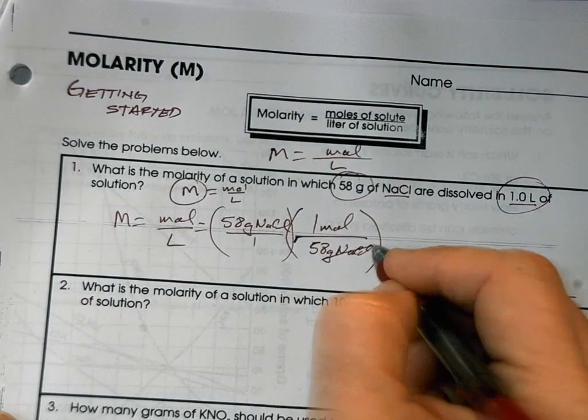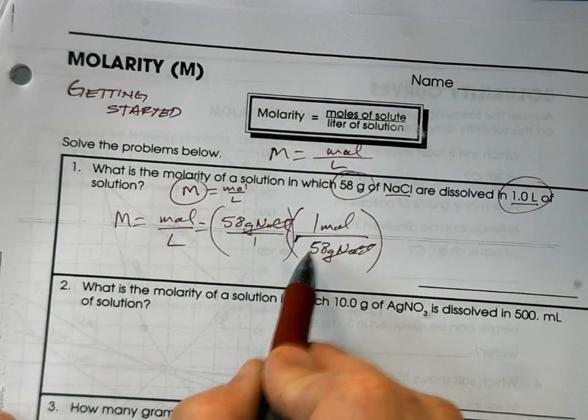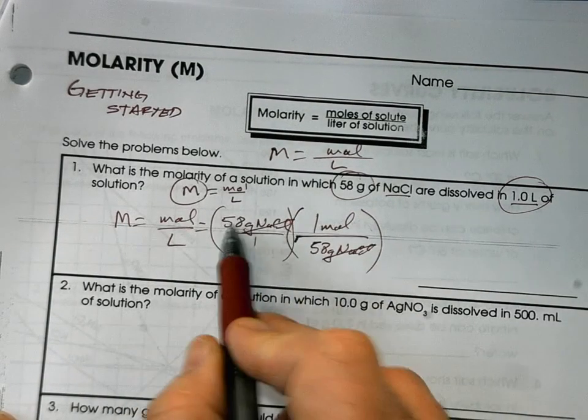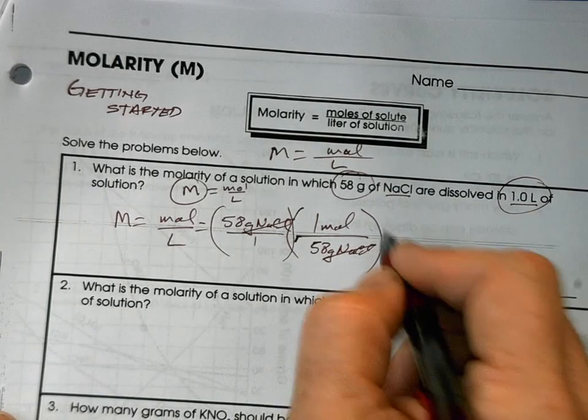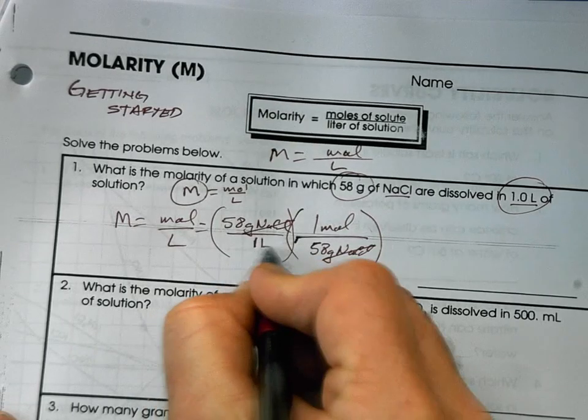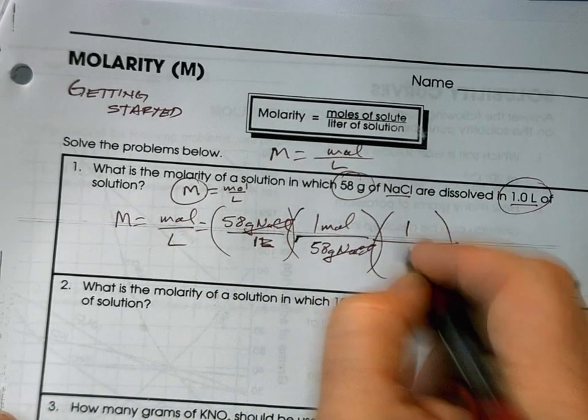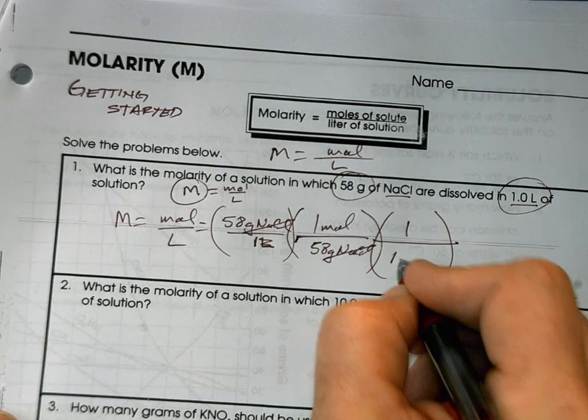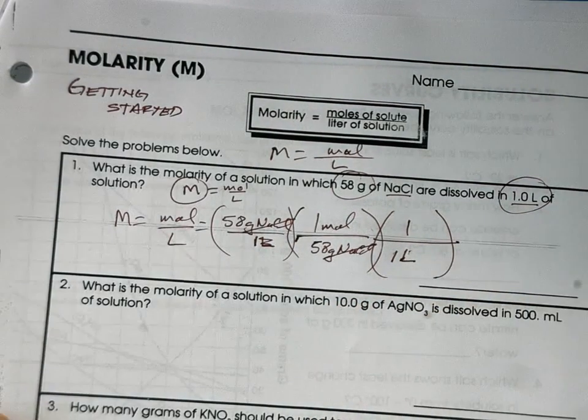So now at this point, the grams of NaCl cancel out. So we've effectively - that's going to be one. That's an easy one. Then we've got to divide it by one liter. You can do that a couple of ways. You can just come back over here to your given and just put one liter. Or if you don't like that, you can say, okay, we're going to divide it. I'm going to put one over the number of liters, one liter. Either way will work. That's a pretty straightforward one.